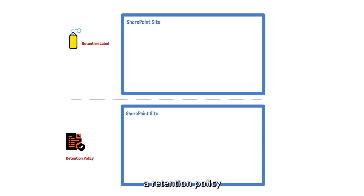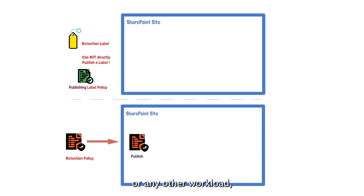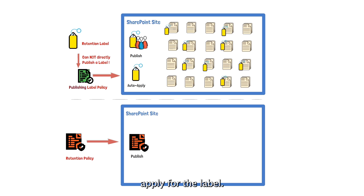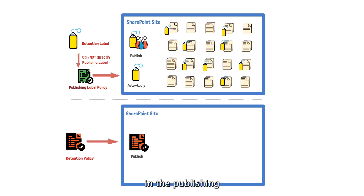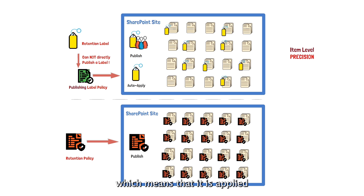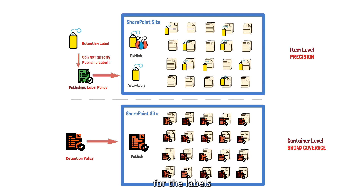A retention policy can be published directly to the SharePoint site or any other workload, but the retention label cannot be directly published — we need a publishing label policy to help with the publishing. There are two methods, publish and auto-apply, for the label. The label can be applied manually or automatically. M365 will auto-apply labels to documents only if the condition specified in the publishing label policy is met. While retention labels are applied to individual items, the retention policy is applied to the entire container, meaning it is applied to each and every item within the container. So we have item-level precision for labels and container-level broad coverage for retention policies.